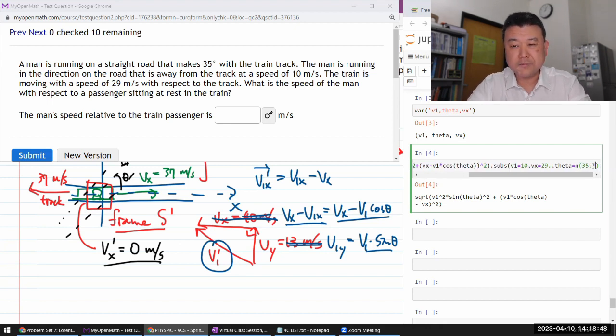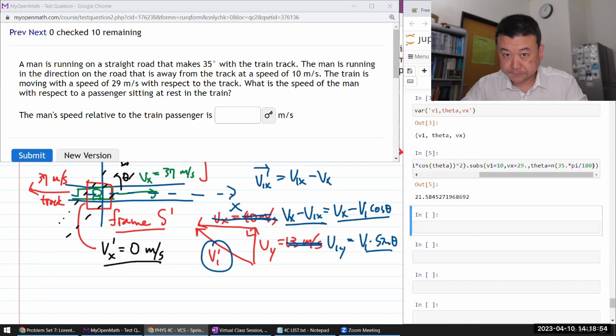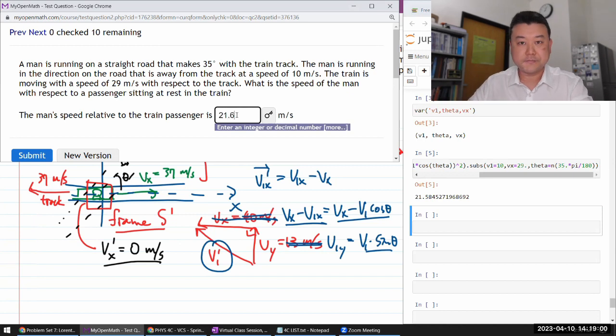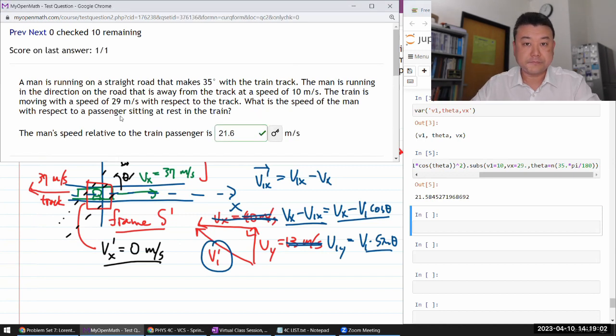So, it will be times pi divided by 180. All right. So, I have 21.6, hope that's correct. Yeah. That's it.